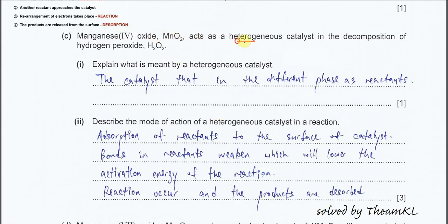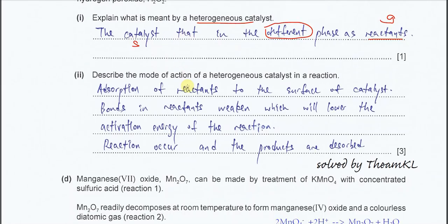Part C: Manganese(IV) oxide, MnO₂, acts as a heterogeneous catalyst in the decomposition of H₂O₂. Part 1: Explain what is meant by heterogeneous catalyst. Very easy. The catalyst that is in a different phase as the reactants. For example, if reactant is gas, the catalyst can be solid or liquid.